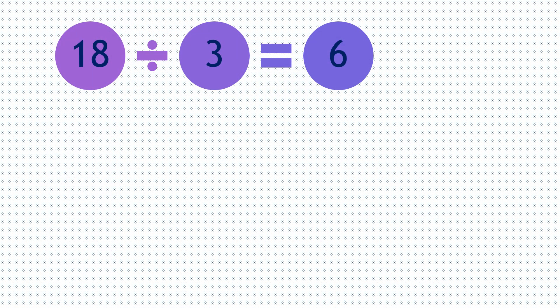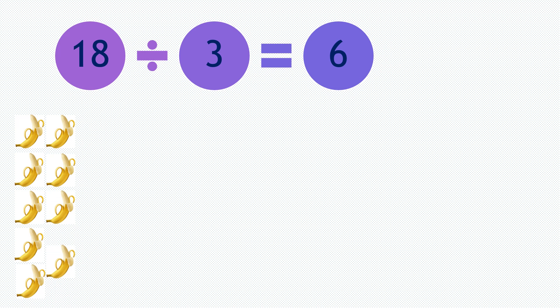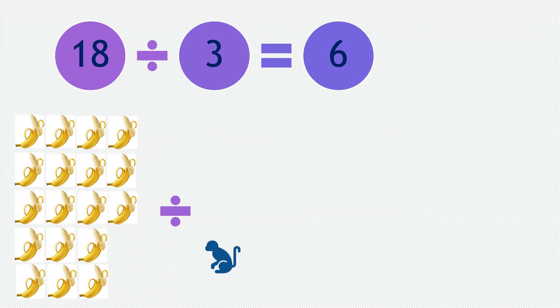Moving on to our next question. 18 divided by 3 equals 6. So if you have 18 bananas — 1, 2, 3, 4, 5, 6, 7, 8, 9, 10, 11, 12, 13, 14, 15, 16, 17, 18 — and divided them by 3 monkeys.